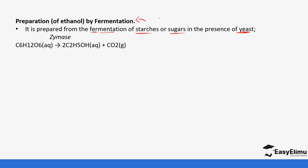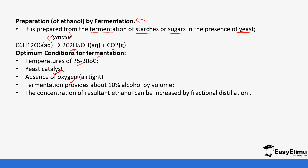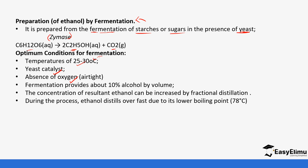For example, glucose is fermented in the presence of an enzyme to form ethanol, and carbon dioxide is produced. Conditions for fermentation include room temperature, the presence of yeast, and the absence of oxygen. Fermentation provides about 10 percent alcohol by volume. The concentration of the resulting ethanol can be increased by fractional distillation.